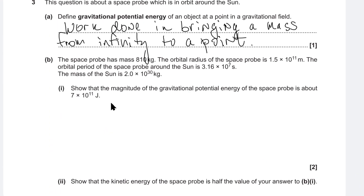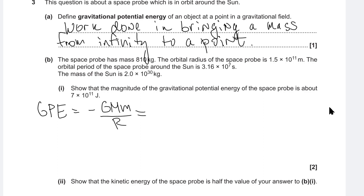Next, we're given some data and what we need to do is show that the magnitude of the gravitational potential energy is about 7×10¹¹ joules. GPE is given by minus GMm divided by R.